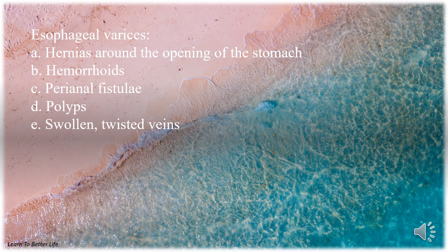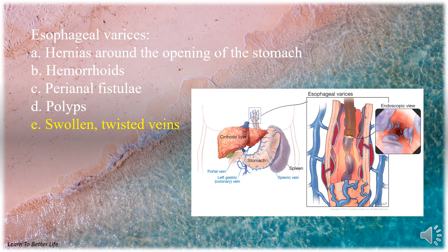Esophageal varices. A. Hernias around the opening of the stomach. B. Hemorrhoids. C. Perianal fistulae. D. Polyps. E. Swollen, twisted veins. The answer is E. Swollen, twisted veins.